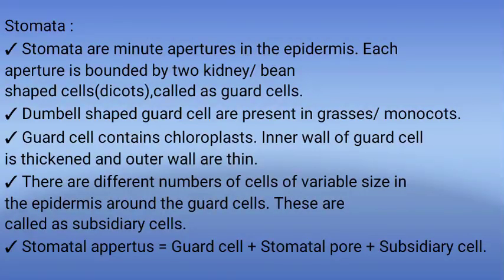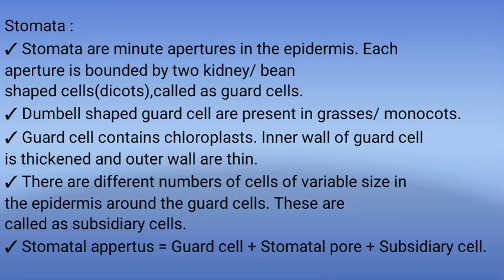The second component is stomata. Stomata are minute apertures in the epidermis. Each aperture is bounded by two kidney or bean-shaped cells in dicotyledons called guard cells. Dumbbell-shaped guard cells are present in grasses or monocotyledonous plants. Guard cells contain chloroplasts. The inner wall of the guard cell is thickened compared to the outer wall. The cells of variable size in the epidermis around the guard cells are called subsidiary cells. The stomatal apparatus is composed of guard cells, stomatal pore, and subsidiary cells.